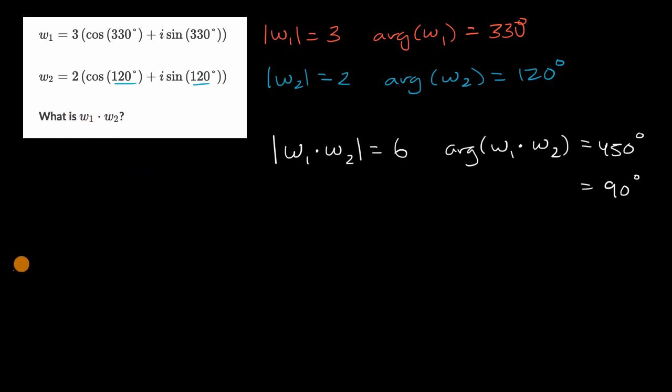And so we can rewrite this here, or we can rewrite the product as W sub one times W sub two is equal to its modulus six times cosine of its argument, 90 degrees, plus I times sine of its argument.